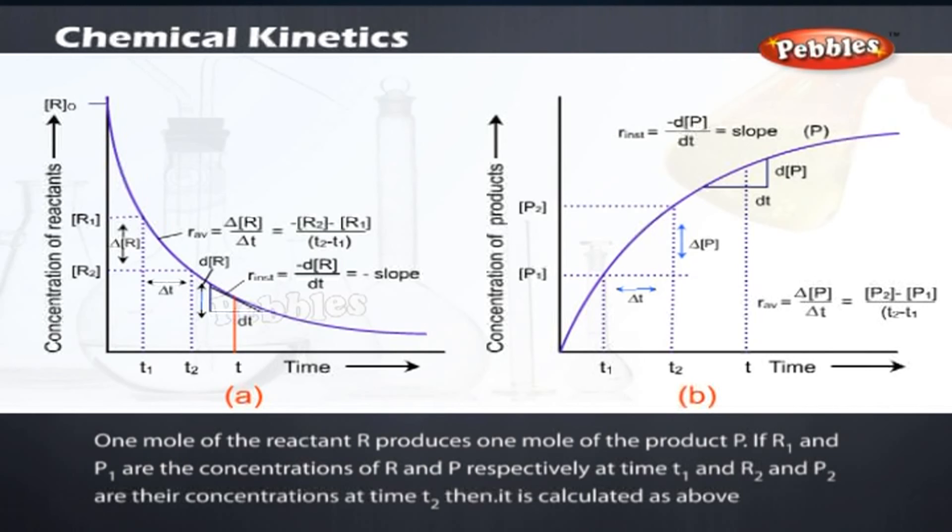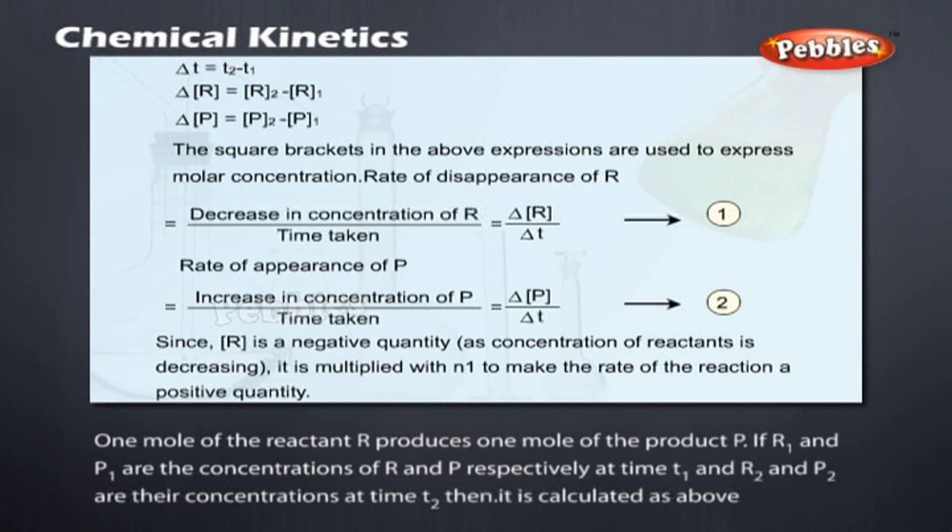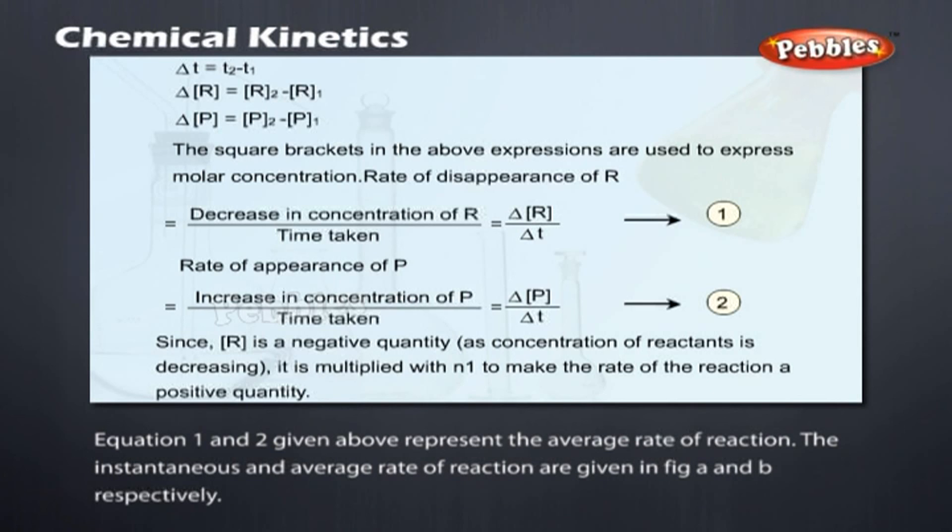If [R]1 and [P]1 are the concentrations of R and P respectively at time T1, and [R]2 and [P]2 are their concentrations at time T2, then it is calculated as above. Equations 1 and 2, given above, represent the average rate of reaction. The instantaneous and average rate of reaction are given in figures A and B respectively.